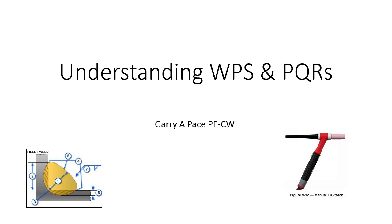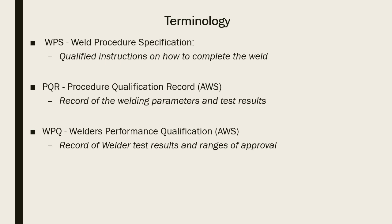Understanding WPSs and PQRs. There are basically three documents we need to talk about. A welding procedure specification, or WPS, is the recipe that welders use. A procedure qualification record, or PQR, is a document that shows what we did in our science experiment and backs up our recipe, our WPS. And then we have our welding performance qualification paperwork — this is about qualifying people. That's what we're going to talk about in this module: welding performance qualification, WPQs.